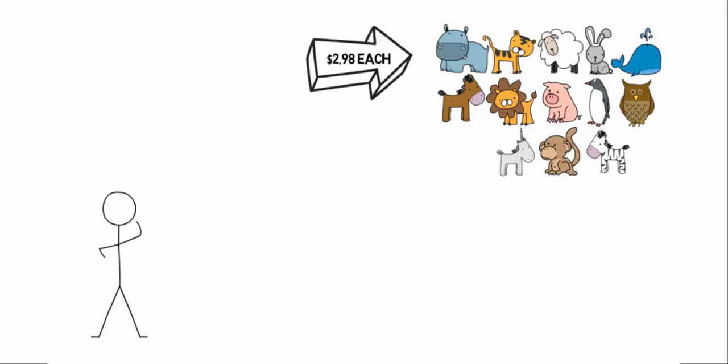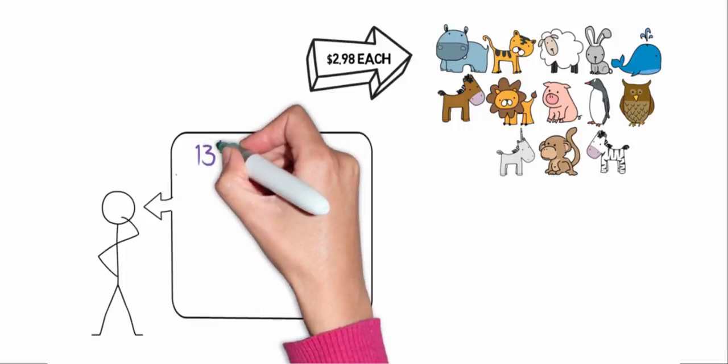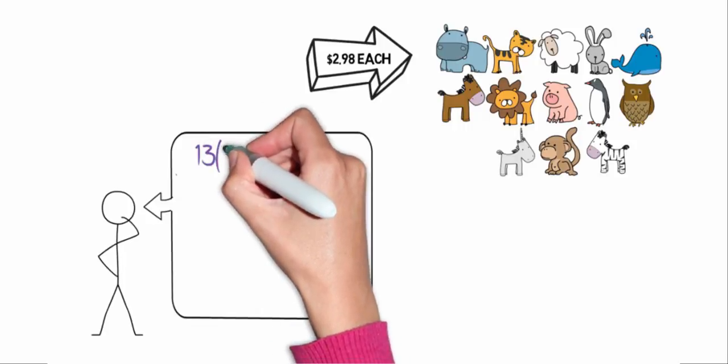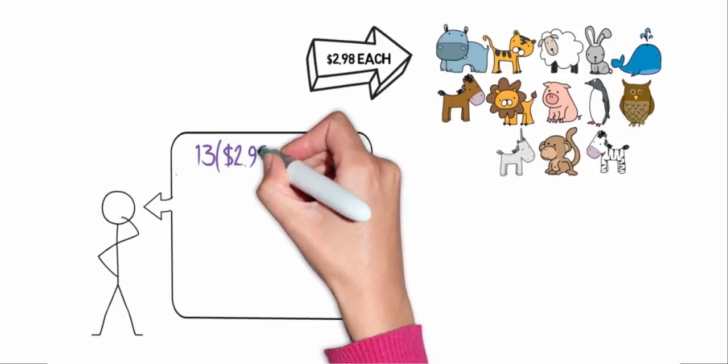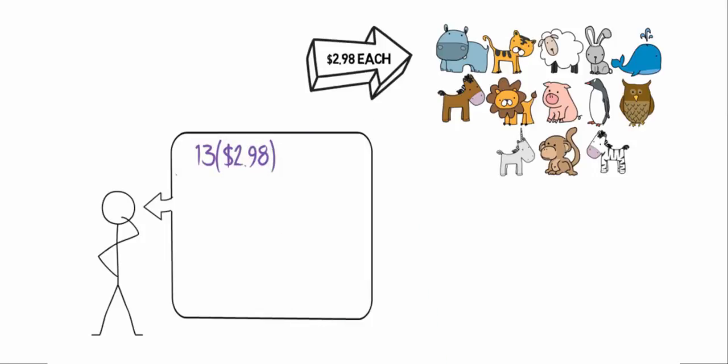Let's say, for example, you bought thirteen items and each item cost two dollars and ninety-eight cents. That's going to be kind of a nuisance of a problem to solve.